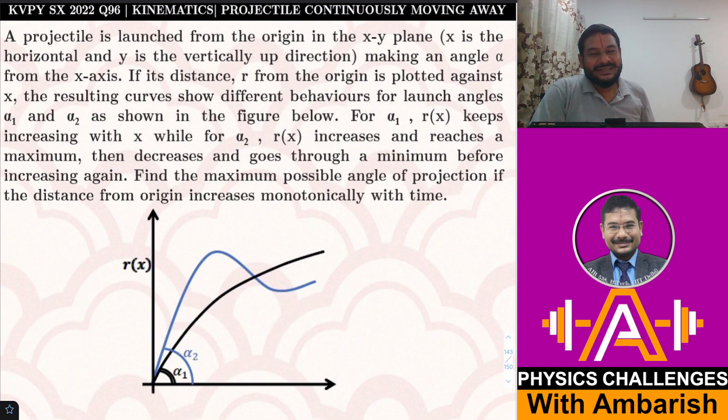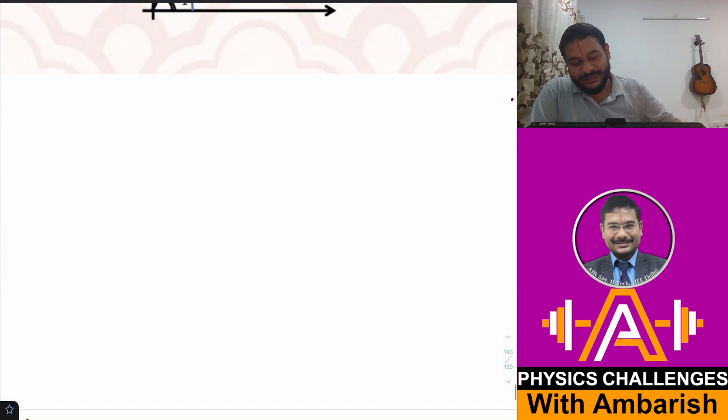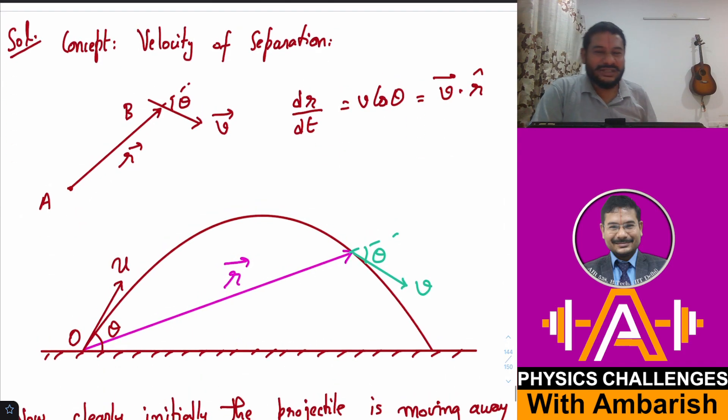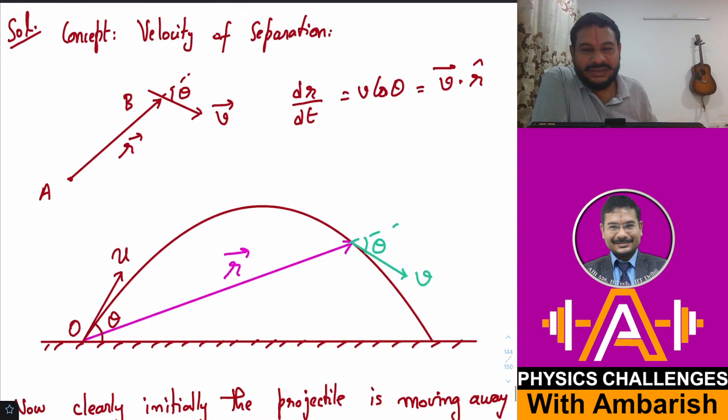The concept that I am going to use here is the velocity of separation - that's a standard concept that you study in kinematics. If there is a particle A and a particle B with velocity v vector, and position vector of B with respect to A is r vector at angle θ, then rate of change of this distance r is the component of velocity along the line joining AB.